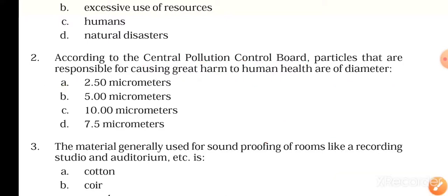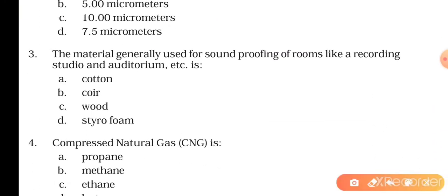The third question is: the material generally used for soundproofing of rooms like a recording studio and auditorium is cotton, coir, wood, or styrofoam. The right answer will be styrofoam. Styrofoam is a formed polystyrene and it is used as soundproofing for rooms.